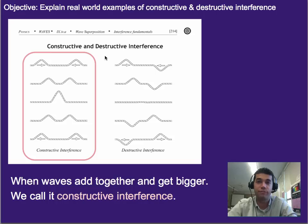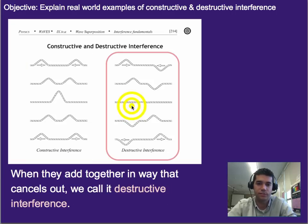So superposition describes how to add those two displacements together. But in general, we call this wave phenomena interference. Constructive interference is when you get two things that add together and make something bigger, so a bigger displacement. Destructive interference is when you have the two things overlap and cancel each other out. So constructive is this one, and destructive is this one.